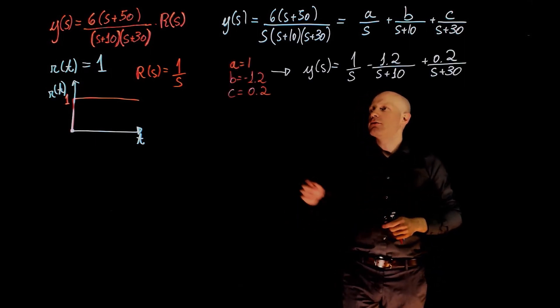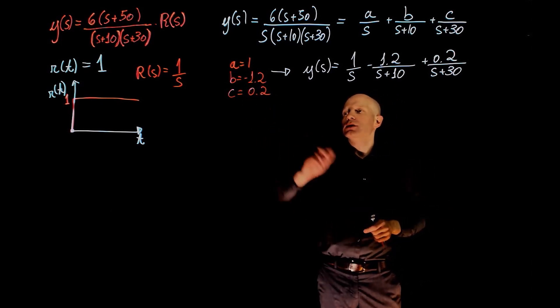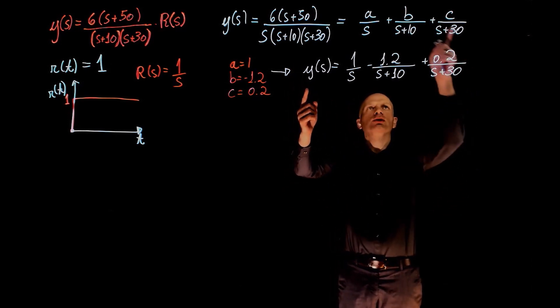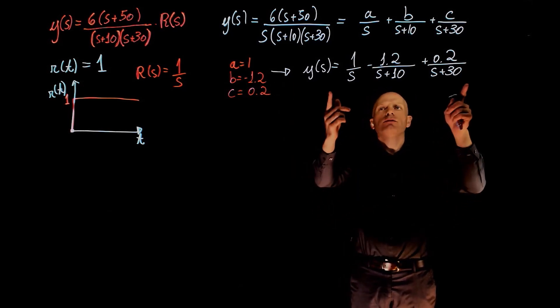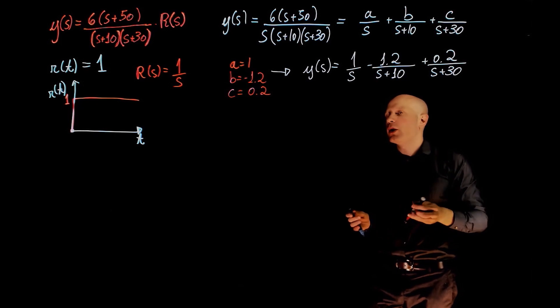After solving for a, b, and c, we find that a is 1, b is negative 1.2, and c is 0.2. So I now rewrote the expression by replacing the coefficients with what we found here, and you can finally find y of t, which is the inverse transform of y of s.